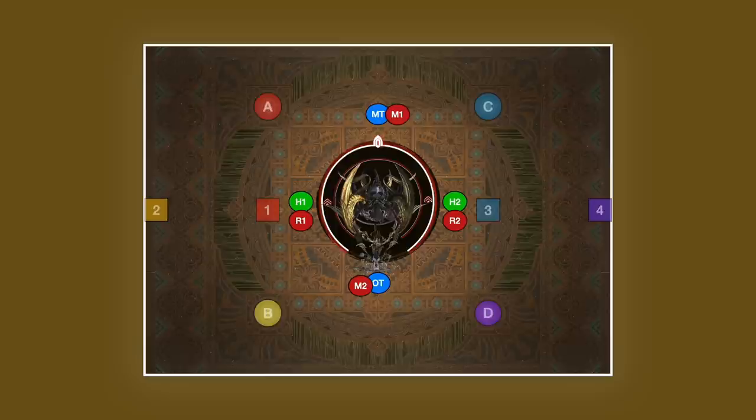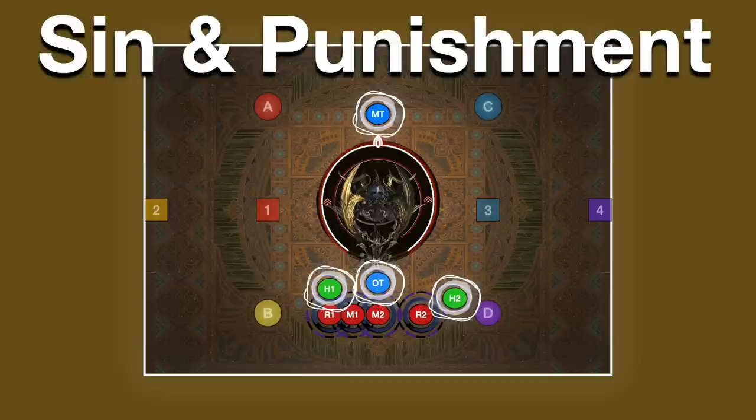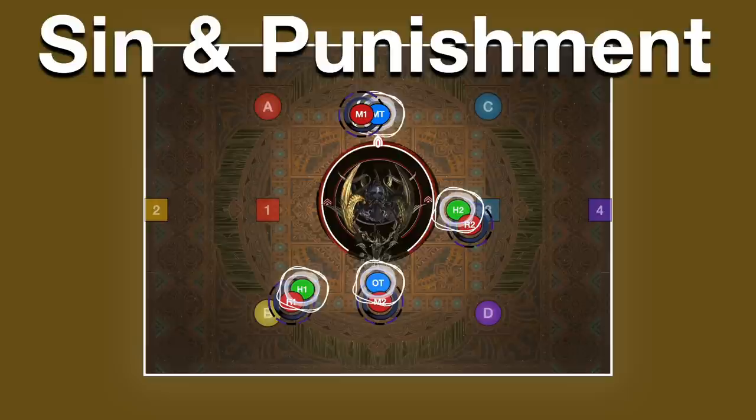The only mechanic this will ever be required for is one called Sin and Punishment, where players are targeted with light and dark circles. All tanks and healers get one color, all DPS get the other color, and you just need to make sure that you have one of each stood next to each other. It doesn't matter where you are, as long as you're not stacked too near to any other pair.